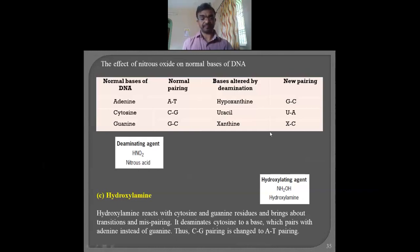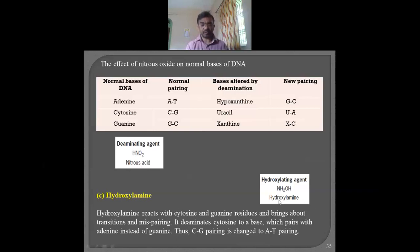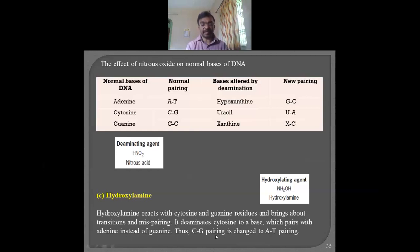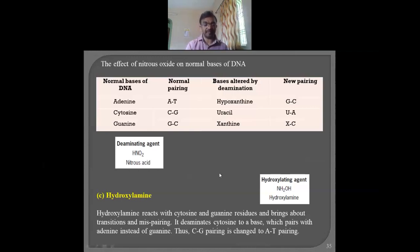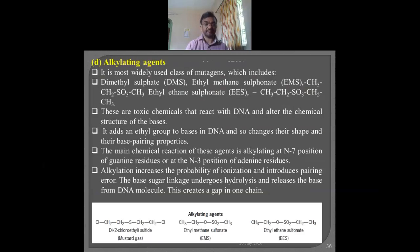Hydroxylamine (NH₂OH) reacts with cytosine and guanine and brings about transition and mispairing. It forms a slightly altered structure, and due to deamination of cytosine, the pairing pattern changes — the C:G pairing is changed to A:T. This is similar to the previously discussed examples where structural rearrangement leads to altered bonding patterns.